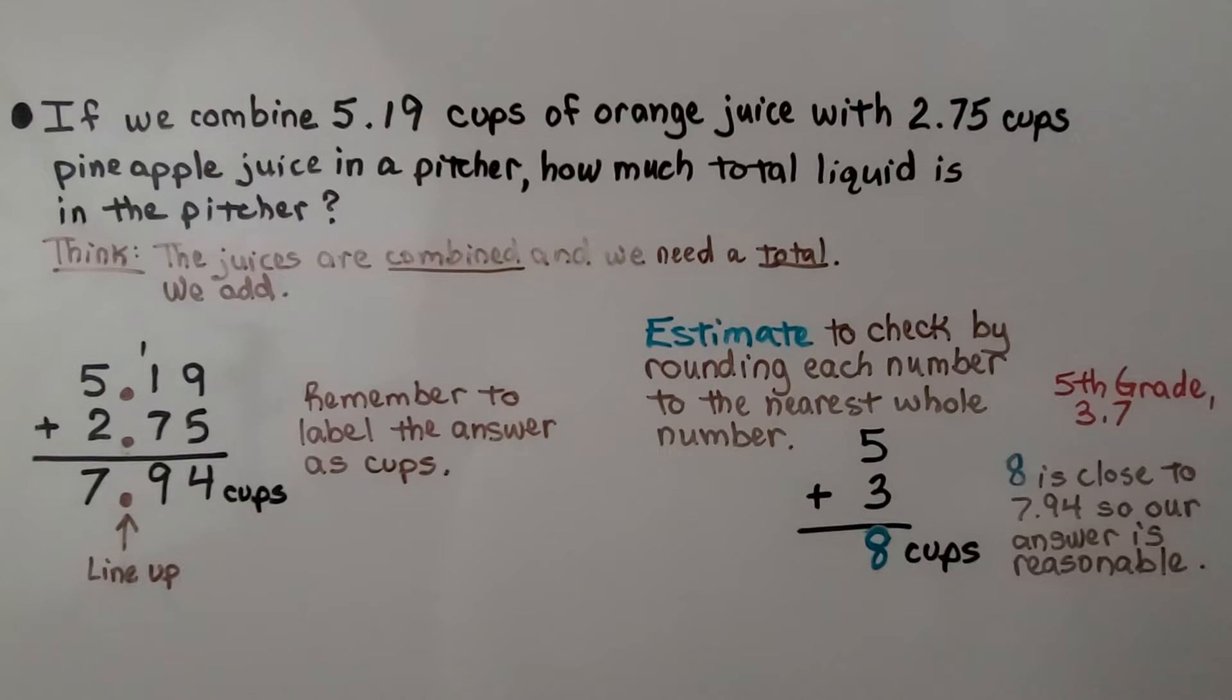If we combine 5 and 19 hundredths cups of orange juice with 2 and 75 hundredths cups of pineapple juice in a pitcher, how much total liquid is in the pitcher? We think the juices are combined and we need a total. So we add.